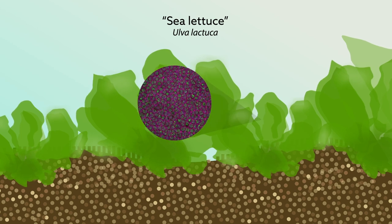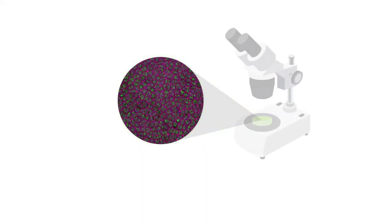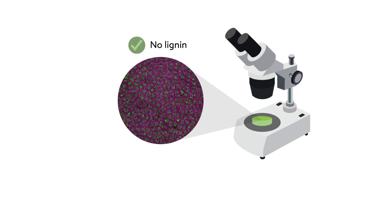Its cellulose content has made the algae especially interesting to science and industry, mostly because sea lettuce, unlike wood, contains no lignin. This makes the energy and chemically intensive process of de-lignification unnecessary, and it makes extracting cellulose easier overall.